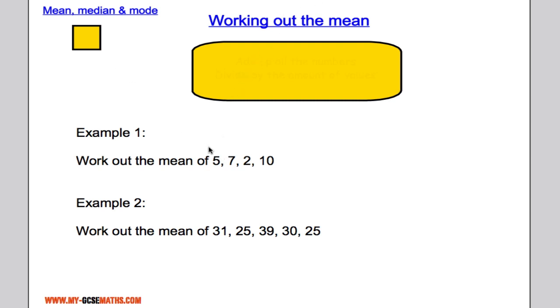So suppose we have a house, and the house has four rooms. In one room we have five people, the other room we have seven people, another room we've got two people, and another room we've got ten people. So we've got five, seven, two and ten.